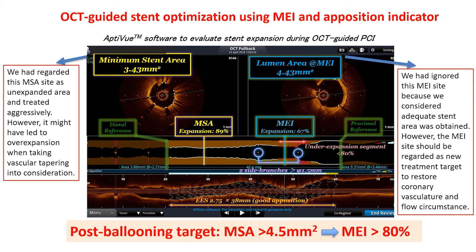This is an actual OCT analysis case with long stenting across a bifurcation. Minimum stent area is 3.45 mm², located at the distal main vessel cell, but expansion index is 89%, meaning the stent is sufficiently expanded relative to the distal reference. Minimum expansion index is 67%, located at the proximal main vessel cell with stent area of 4.5 mm², which used to be considered adequate stent expansion. However, it is inadequate relative to the proximal main vessel reference, which requires more proximal optimization. Therefore, the target of post-dilation is changed from minimum stent area to minimum expansion index.